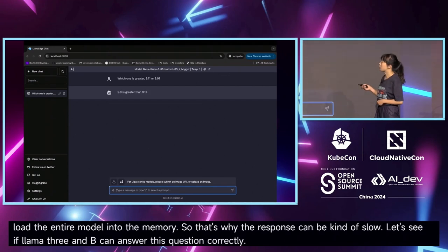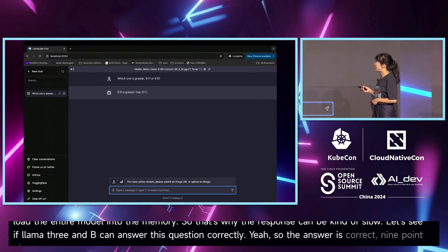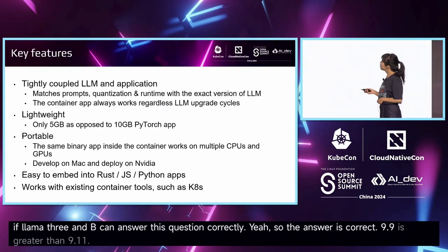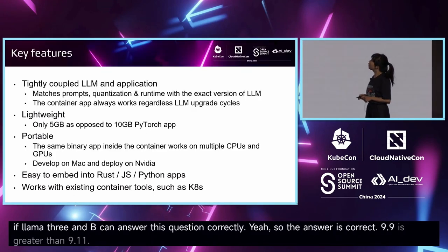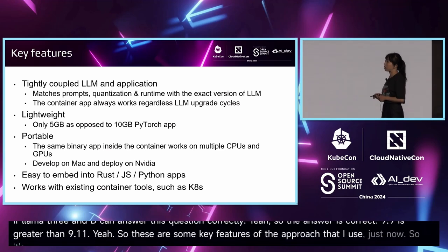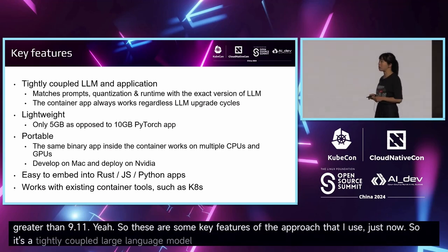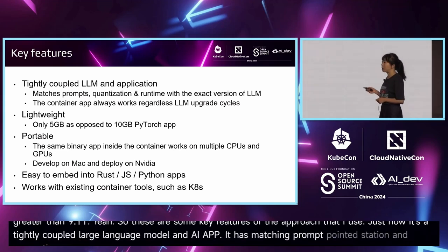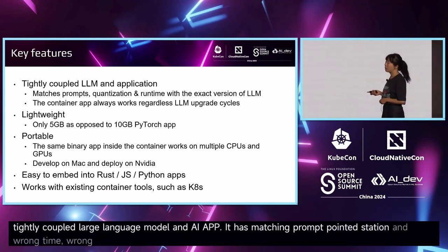The answer is correct — 9.9 is greater than 9.11. These are some key features of the approach I just used: it's a tightly coupled large language model and app, so it has matching prompt, quantization, and runtime — here I mean things like llama.cpp.